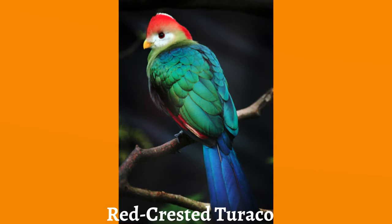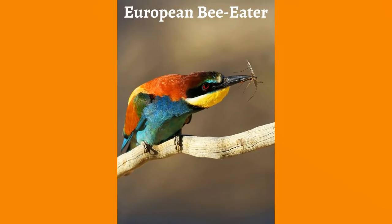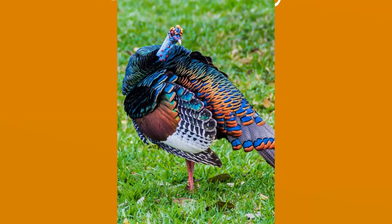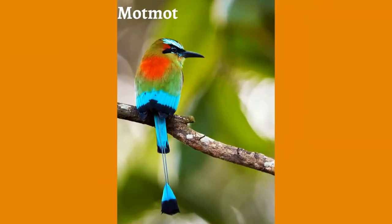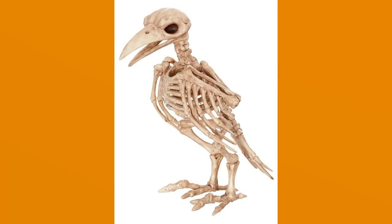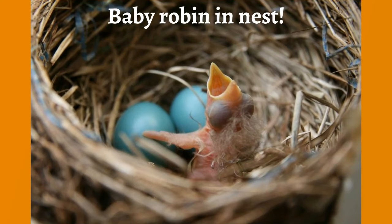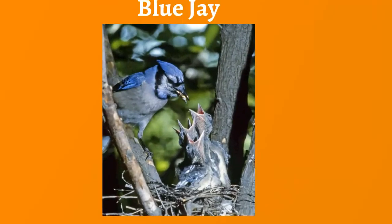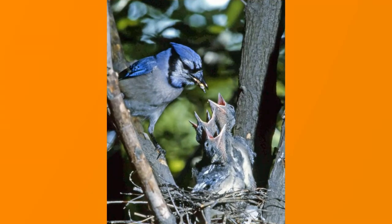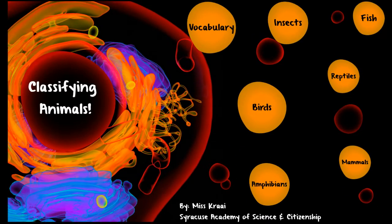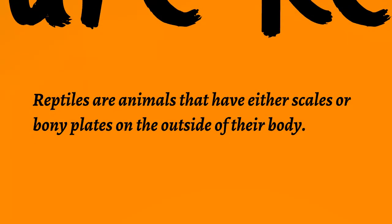Here are examples of birds: a red-crested turaco, a European bee-eater, a turkey, and a mopoke. This is a skeleton of a bird. Birds can lay eggs — this is a baby robin in a nest; robins' eggs are normally a really pretty blue color. This is a blue jay with her little babies, and the babies are opening their mouths so their mama can feed them, since they can't get food for themselves yet.